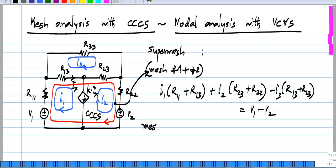And the third mesh is not affected by this. So, for mesh number 3, we have the same equation that we had before. This equals 0. Now, the current controlled current source itself introduces another constraint. We know that the current in this minus the current in that equals this current.